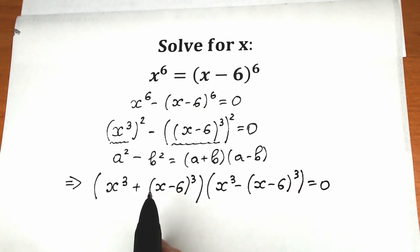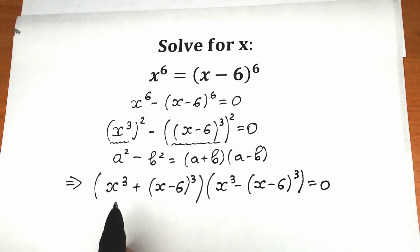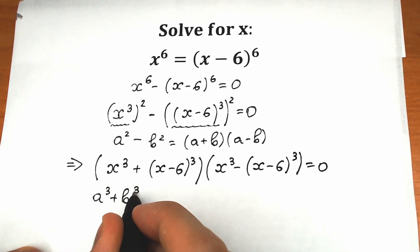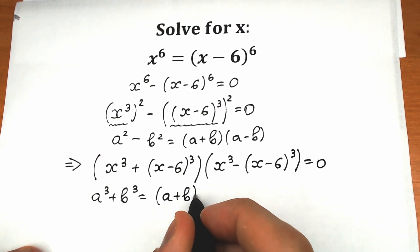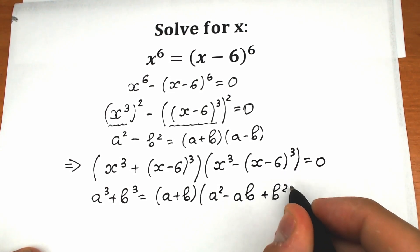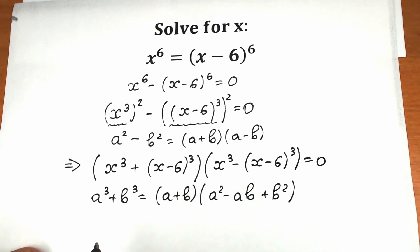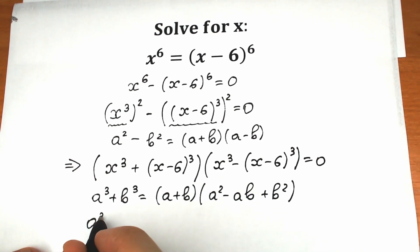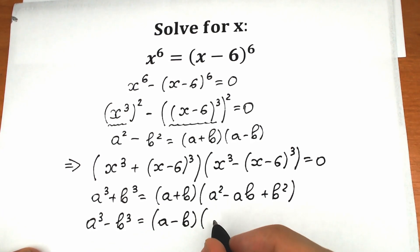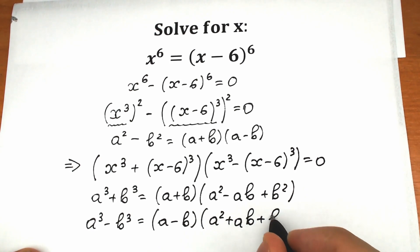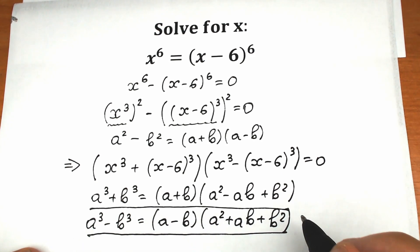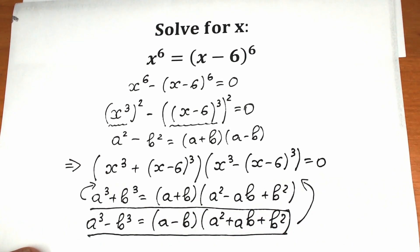Looking at the first parenthesis, we have a sum of two cubes. Let's remember the formula: a cubed plus b cubed equals a plus b, times a squared minus ab plus b squared. And for the second parenthesis we have a difference of two cubes: a cubed minus b cubed equals a minus b, times a squared plus ab plus b squared. We need both of these formulas.